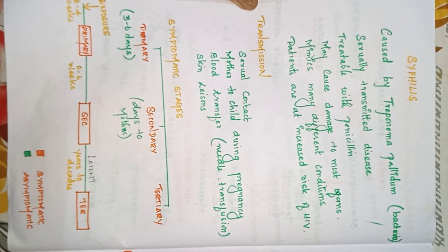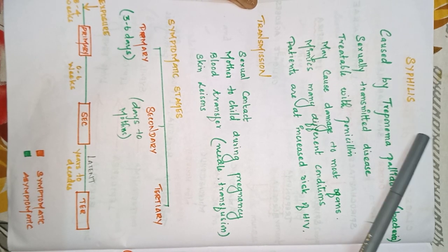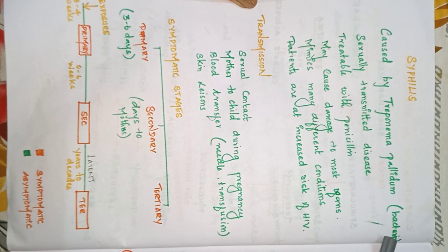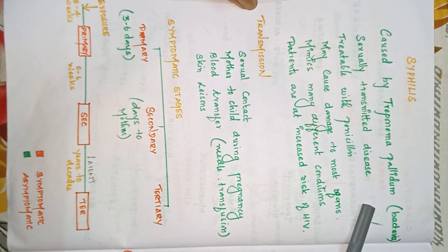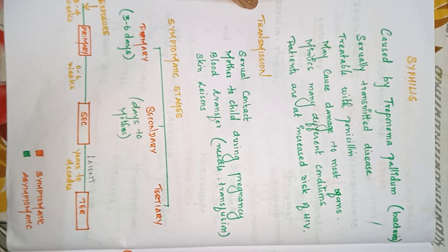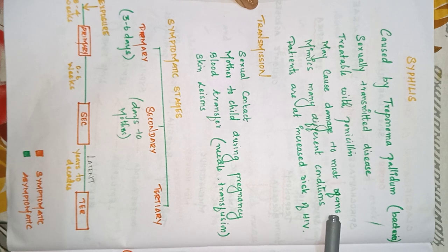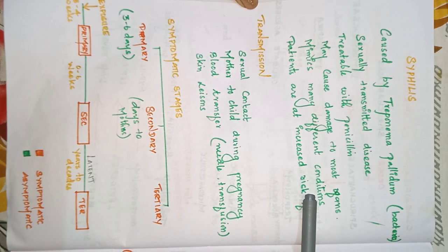Syphilis is caused by Treponema pallidum, which belongs to the family Spirochaetaceae. It is a sexually transmitted disease. In the first stages it is treatable with penicillin, but once it progresses to the chronic stage, no curative treatment is available. Syphilis may cause damage to most organs.